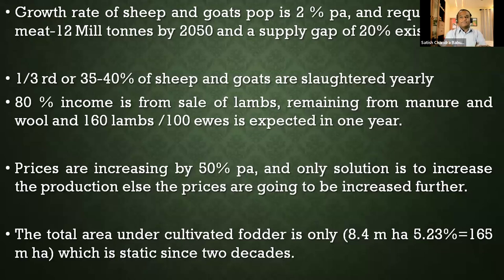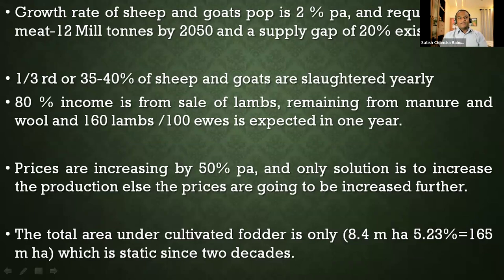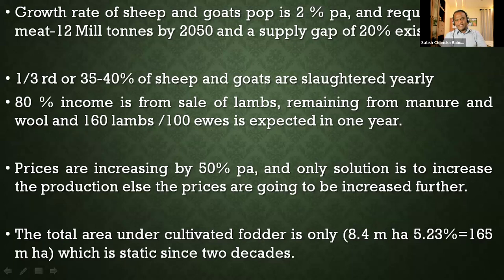The sheep and goat population is growing by 2 percent and meat production is going to be around 12 million tons by 2050, but there is a huge demand gap of around 20 percent from the supply side. Every year we slaughter around 35–40 percent of the existing sheep and goat population — that's how the population grows at 2–3 percent per annum. About 50 percent of income comes from sale of lambs, and the expected lambing percentage is around 160 lambs per 100 ewes per year.